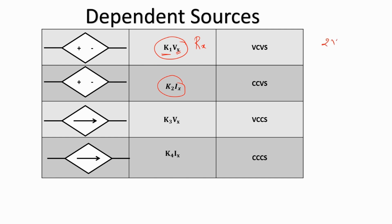For example, if the voltage drop across element Rx is 2 volts and the constant k1 is 3, then this voltage dependent source's voltage would be 3 times Vx, where Vx is 2 volts, which equals 6 volts, and so forth.